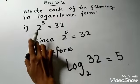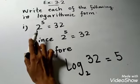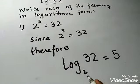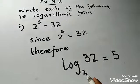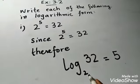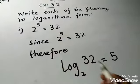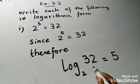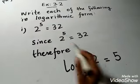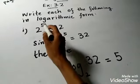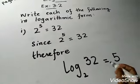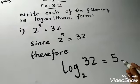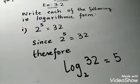You have written log with base 2, which was the base. Log base 2 of 32 is equal to 5 — you have placed the base 2, then 32, then equal to 5. You have successfully converted it to logarithmic form.